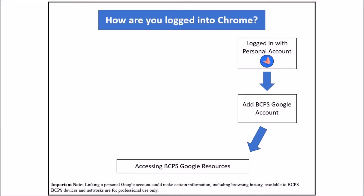If you are logged in with a personal account, you will see an icon with a Google avatar. Remember that when working on a BCPS computer or the network, there is no assumption of privacy. Linking a personal Google account could make certain information, including browsing history, available to BCPS. BCPS devices and networks are for professional use only.